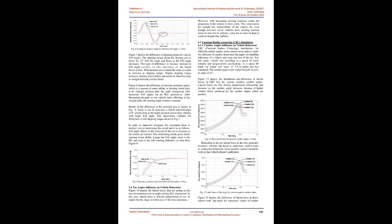Figure 8 depicts the steering assistance angle — a measure of returnability of the steering wheel back to its original position after path changeover — for numerous PSI angles in an SLC maneuver. After changing the path, as the vehicle starts moving in the straight path, the steering angle remains constant. It can be seen that a vehicle with a PSI angle of 8 degrees returns back to the initial position slower than vehicles with larger PSI angles. PSI angle causes the front end of the car to rise as the wheels are steered, stimulating better steering return ability. The larger the PSI angle, the more the lift, and the more the self-centering influence.